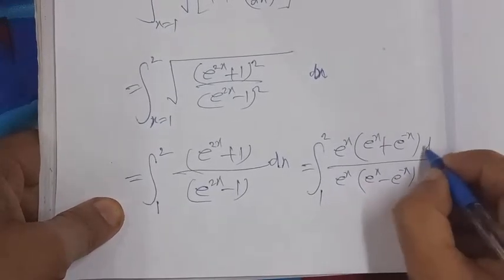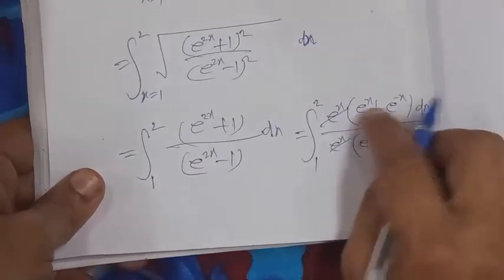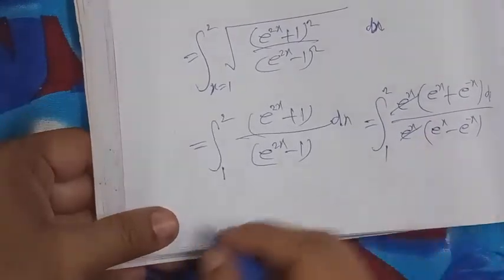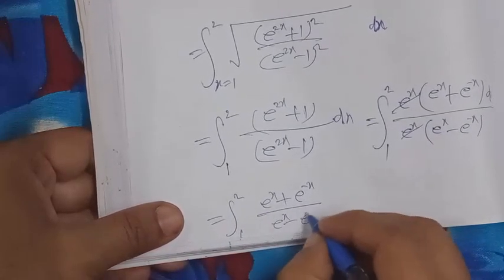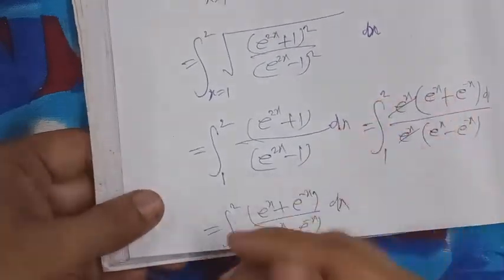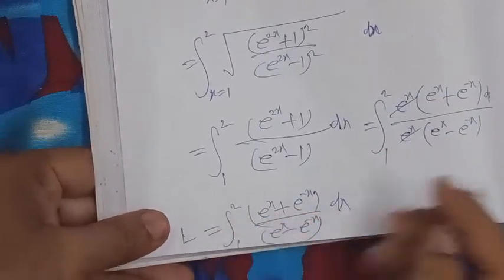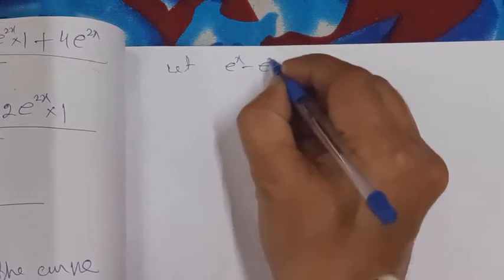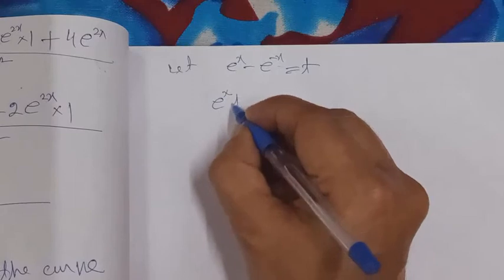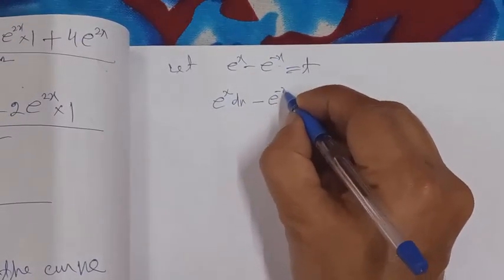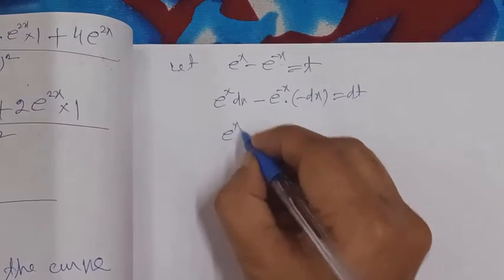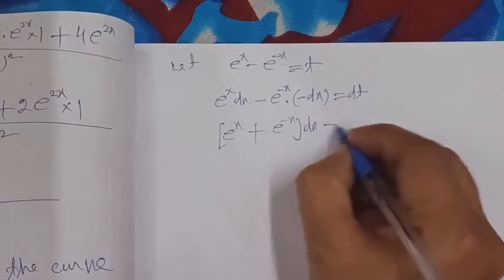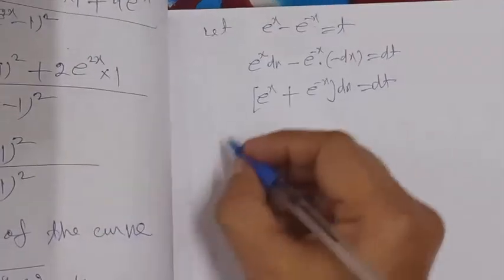Now some terms will cancel. To integrate easily, we use substitution. What remains is (1/2) × [e^x + e^(−x)] / [e^x − e^(−x)]. Let t = e^x − e^(−x). Differentiating: the differentiation of e^x is e^x dx, and of e^(−x) is −e^(−x) dx, so dt = (e^x + e^(−x)) dx. Therefore dx = dt / (e^x + e^(−x)), and the whole expression becomes dt/t after substitution.